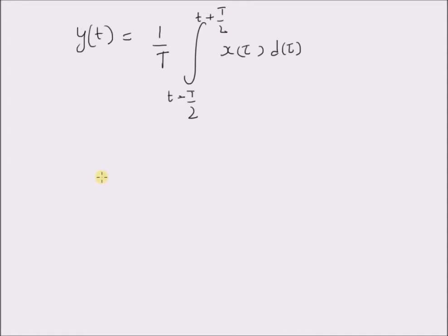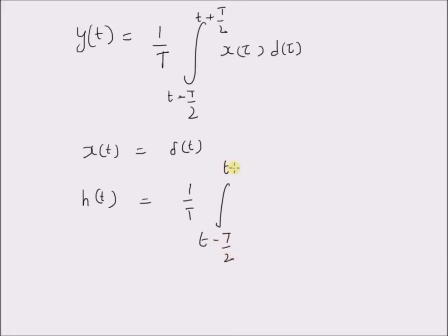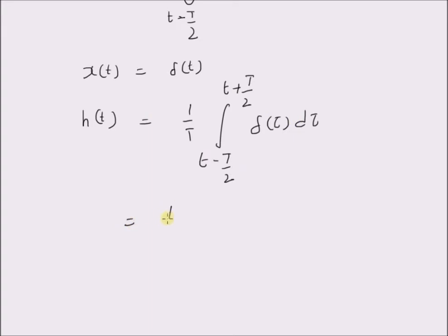The impulse response can be evaluated as follows. We simply plug in x(t) equal to the impulse signal delta(t). Then the output, the impulse response h(t), is equal to 1/T integral from t minus T/2 to t plus T/2 of delta(tau) d tau. Clearly, this integral is equal to 1/T for values of t between minus T/2 to plus T/2. This can be derived by using the shifting property — the other function is basically 1 and we have delta(tau), that is the impulse signal.